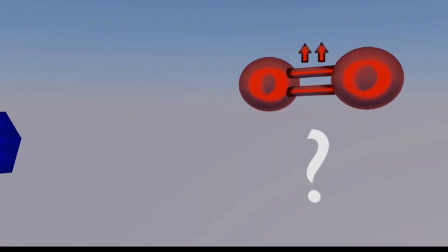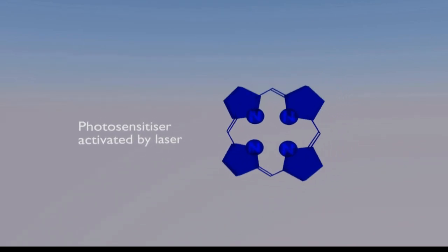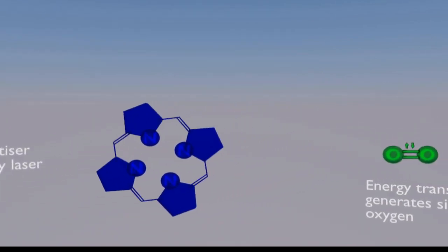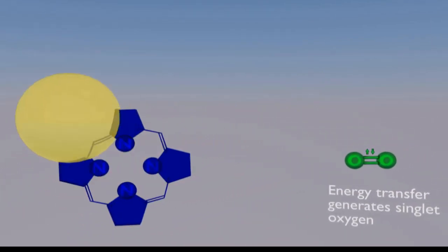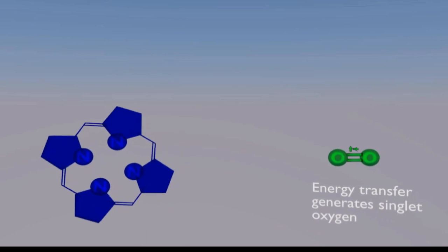How do you make singlet oxygen? One way is to use a photosensitizer. The energy from a photon of light activates the photosensitizer, which then converts ordinary oxygen into toxic, aggressive singlet oxygen.